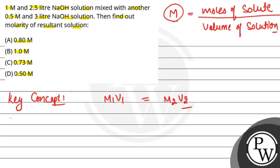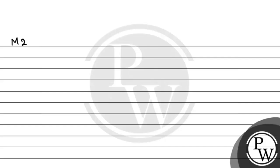For the first solution, M1 will be 1 molar and V1 will be 2.5 liters. So M1 equals to N1 upon V1, and the first solution's moles is 1 into 2.5. For the second solution, M2 is 0.5 molar and V2 is 3 liters. So M2 equals to N2 divided by V2, and the second solution's moles is 0.5 into 3.